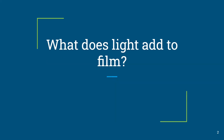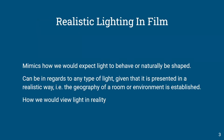Let's focus on what does light add to a film. First of all, I think lighting has to be realistic, regardless of how it's being used, shaped, or manipulated. It should mimic how we expect light to behave or to be shaped — in any type of light presented in a realistic way, whether it's the geography of the room or environment. How would we view light in reality?